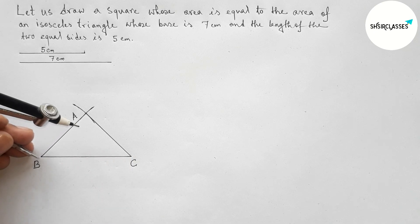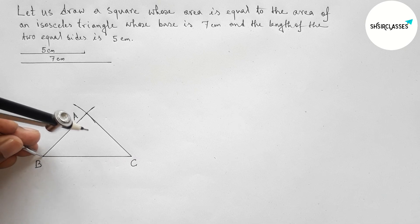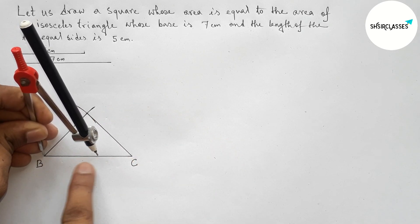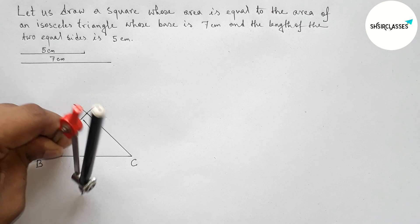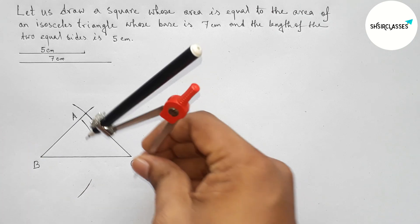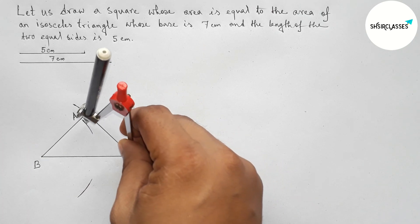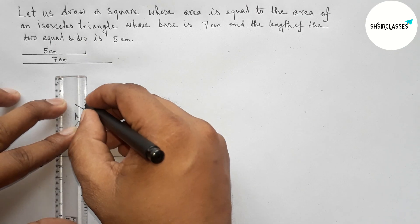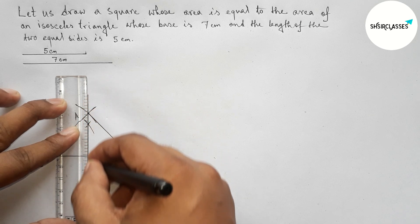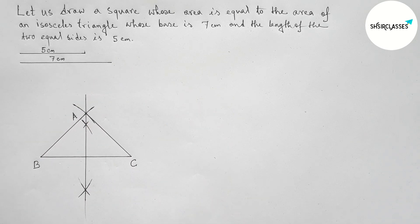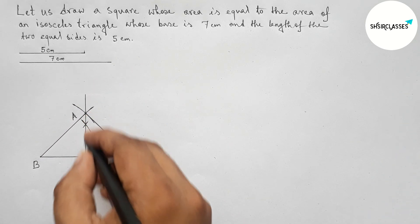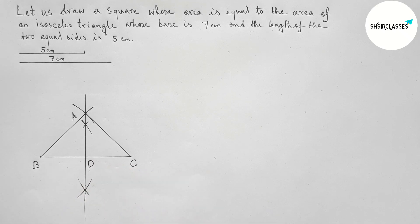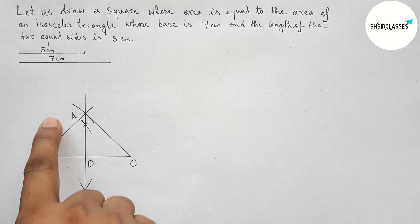Next, bisecting line BC. Placing the compass on point B and taking greater than half of BC, drawing an arc. Then placing the compass on point C and cutting to create intersection points. Joining these to form a perpendicular line passing through point A. This is a perfectly perpendicular line. Taking point D here.